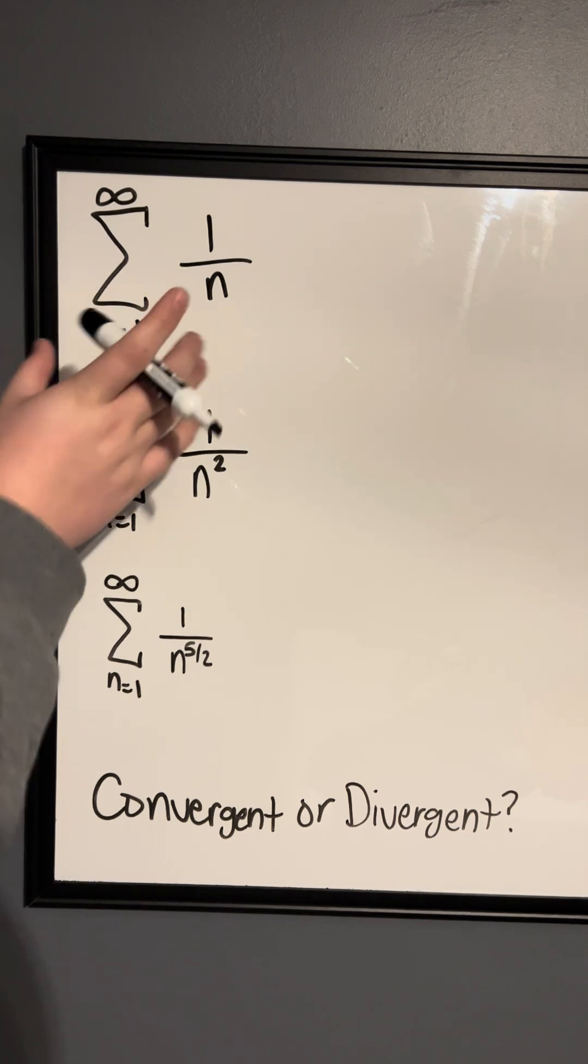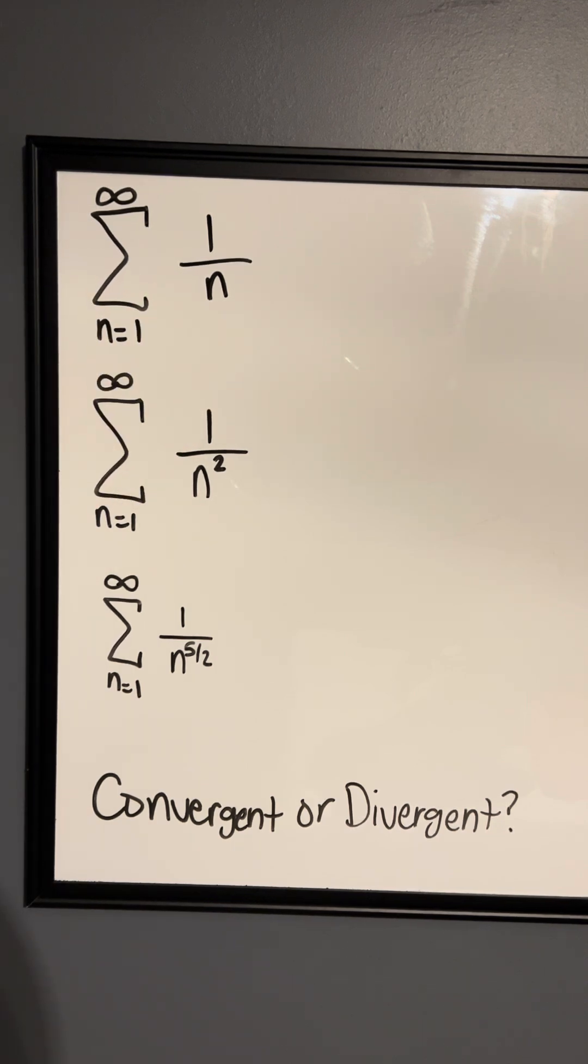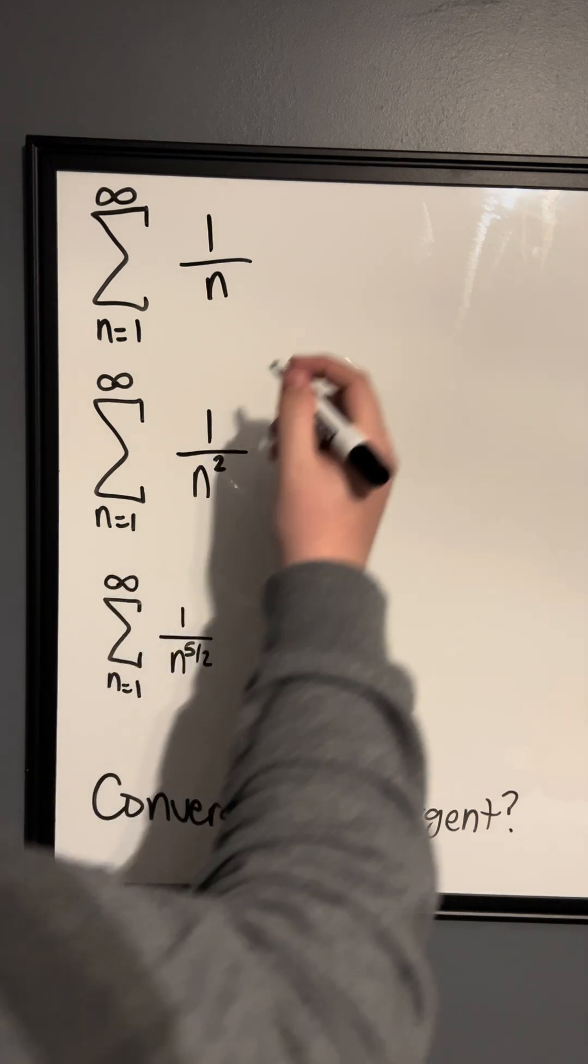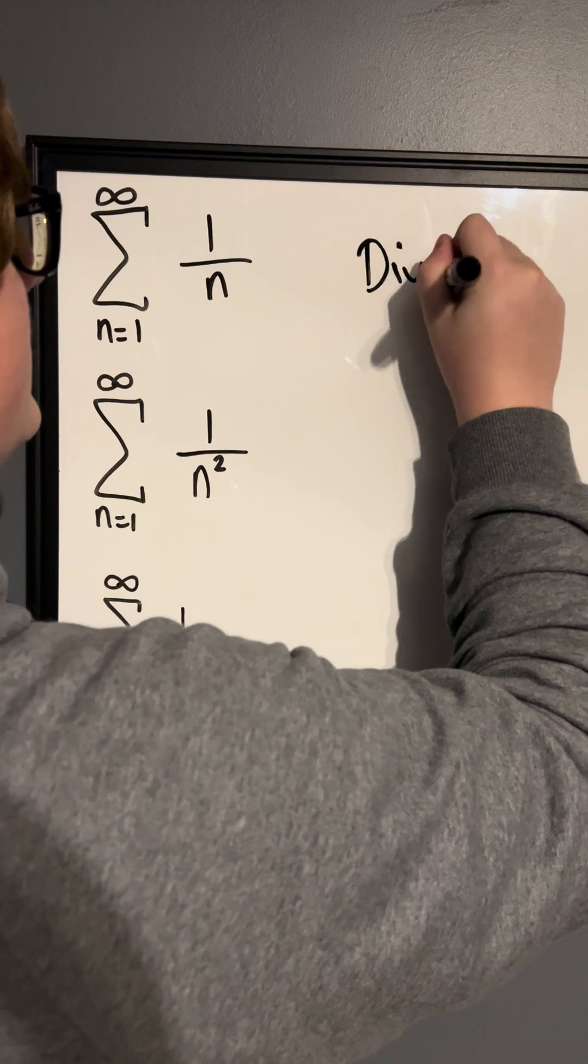So let's look at that. So here we have this first one. It's just 1 over n. So the power of n is just 1. Now, this is what's known as the harmonic series. And the harmonic series, by definition, will diverge. But if we look at it as a p-series, we know that it's equal to 1, which means that it will diverge. So this series diverges.